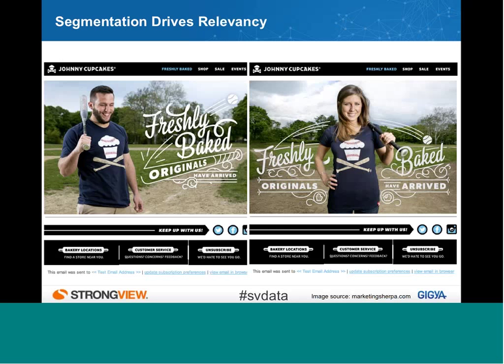Gender is really one of the low-hanging fruits here. A lot of businesses have tried to collect gender in their registration process over the years with varying degrees of success. Through social connect, consumers are more easily willing to give it up because they're getting something in return — that easy ability to log in, avoiding the password problem. Johnny Cupcakes is a business that was really trying to reach their customers and has different appeals based on men versus women. That ability to understand who is a man and who is a woman gave them a better targeting solution.